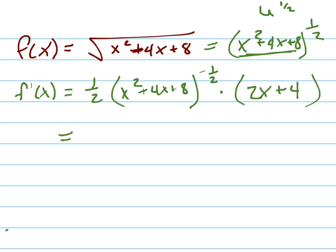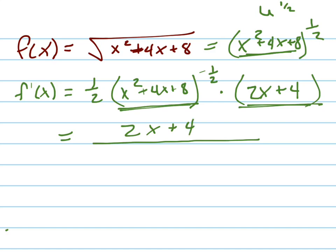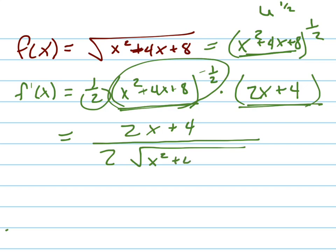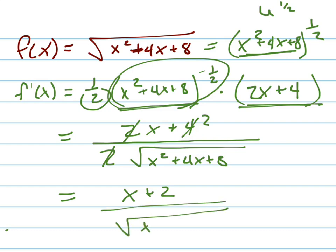Then clean it up. The negative one-half power means it's going to go to the bottom, so I've got a big fraction. I'm going to have 2x plus 4 on the top, and this 2 goes to the bottom along with the whole thing as a square root of x squared plus 4x plus 8. Now I can simplify by factoring a 2 out and canceling it, leaving x plus 2 on the top and the square root of x squared plus 4x plus 8 on the bottom.